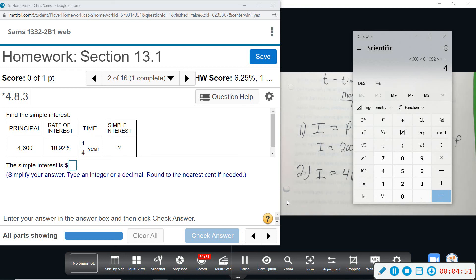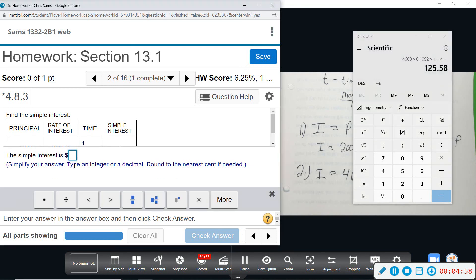Then divided by four, and it gives us one hundred and twenty-five dollars and fifty-eight cents. It says round to the next cent: $125.58.